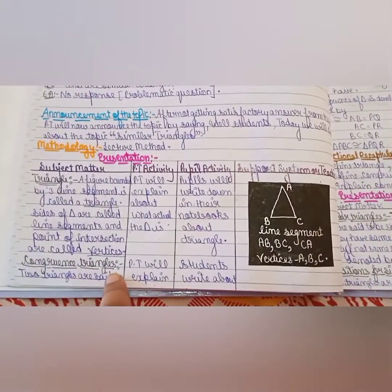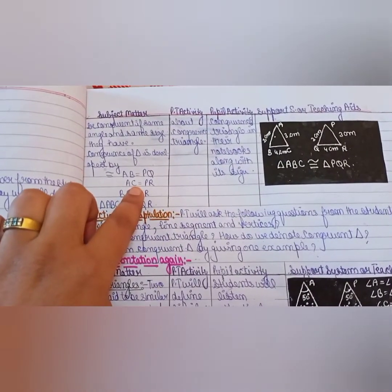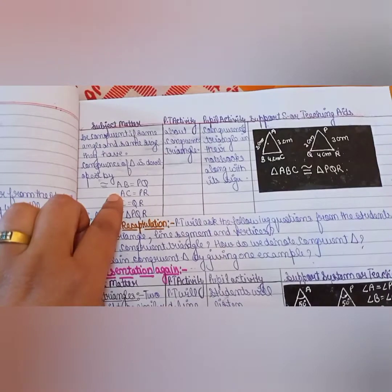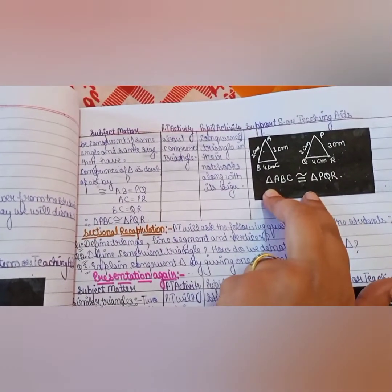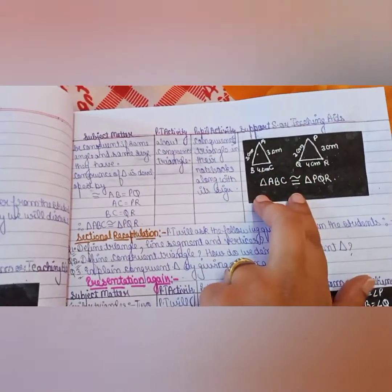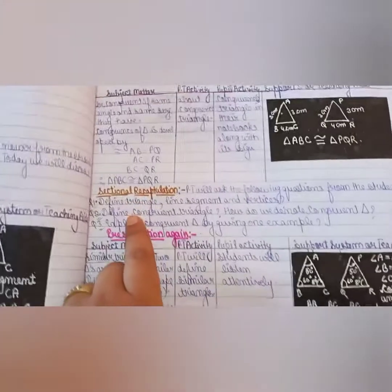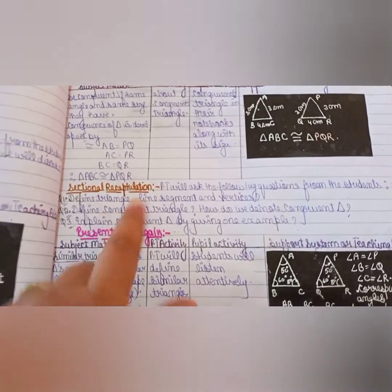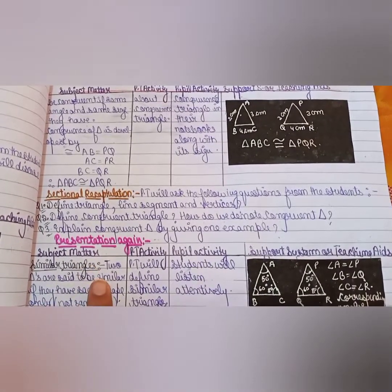Next is about congruent triangles. What are congruent triangles? I teach them about congruent triangles: both triangles which have the same angle sizes and have the same side lengths.